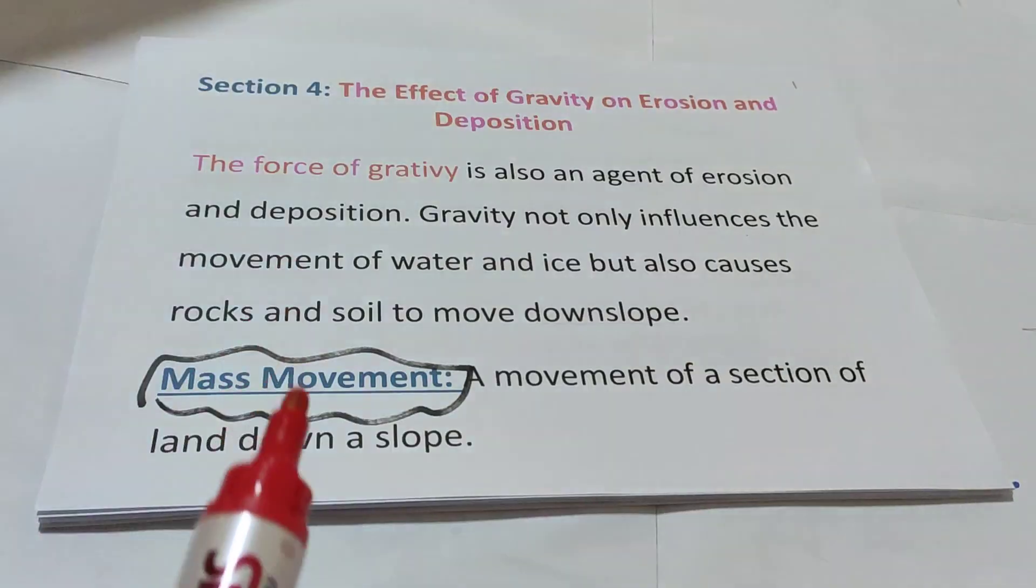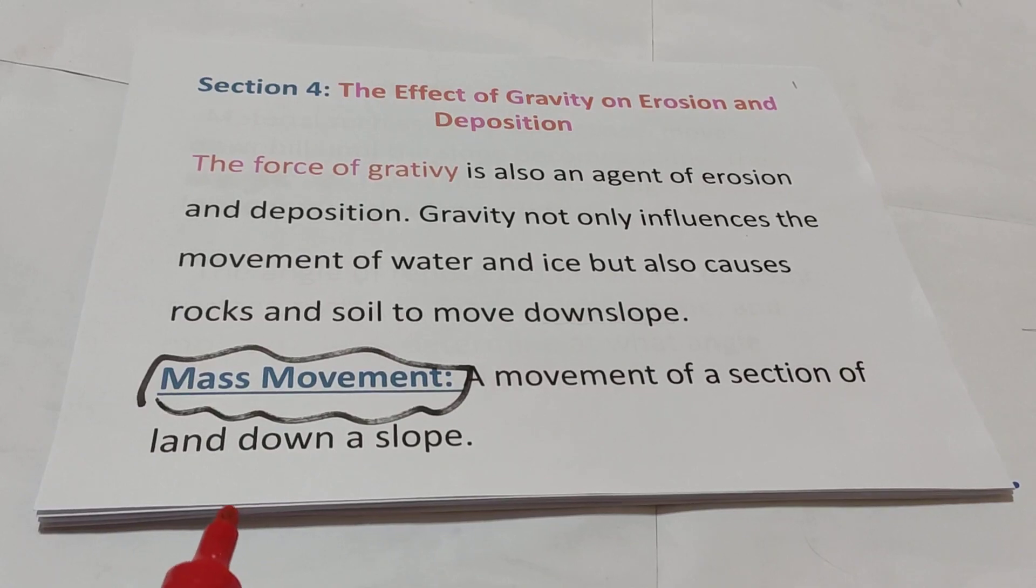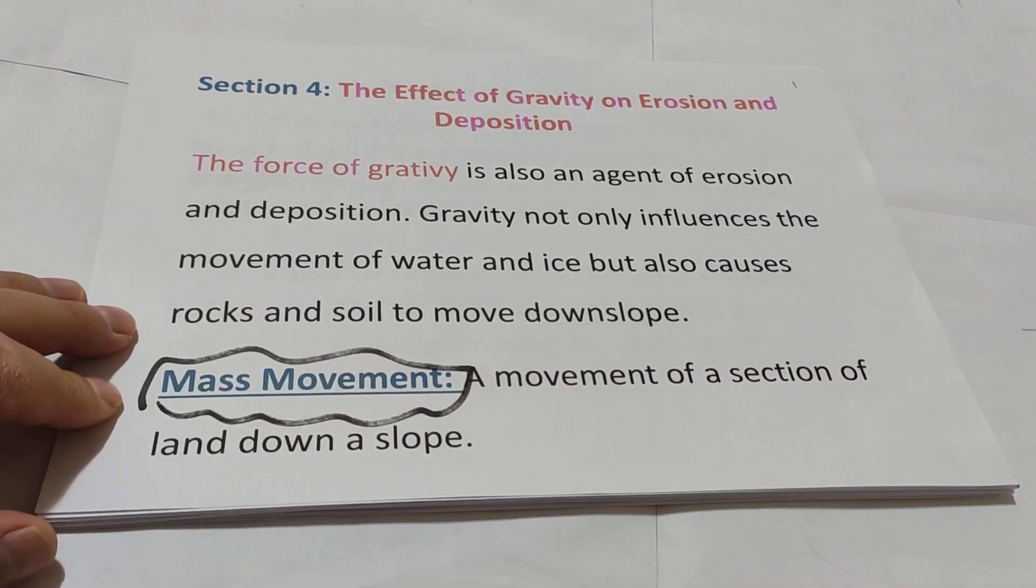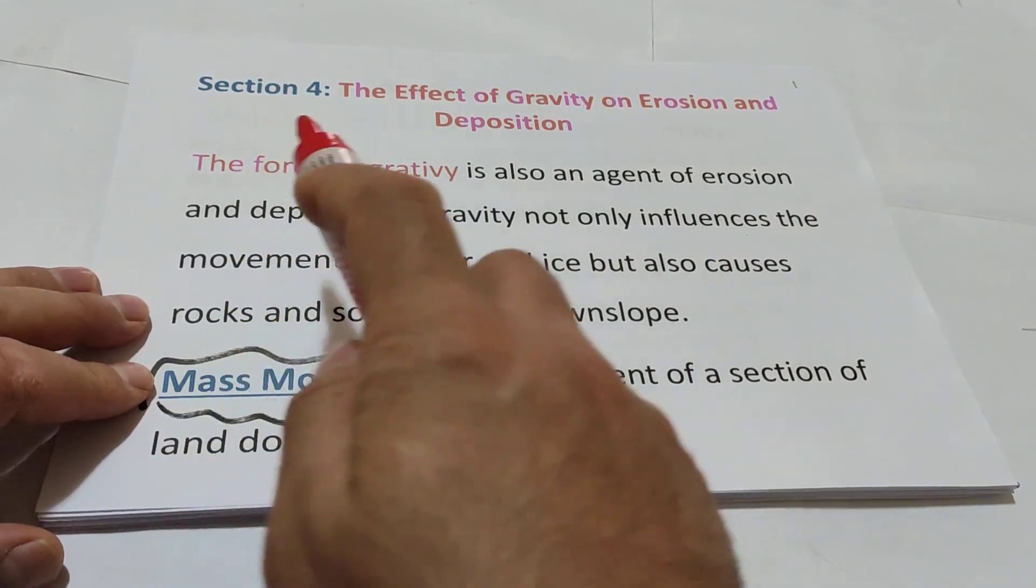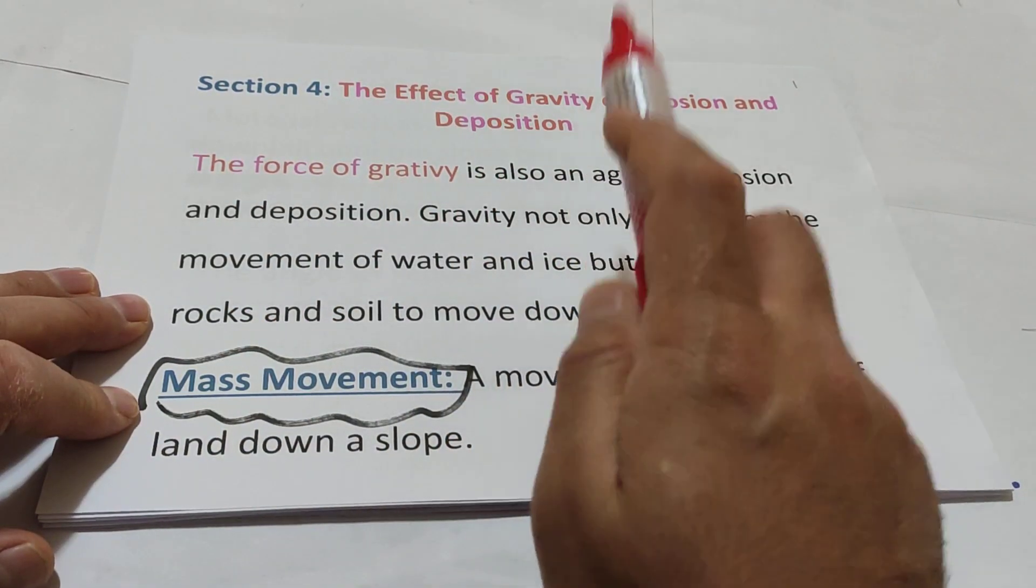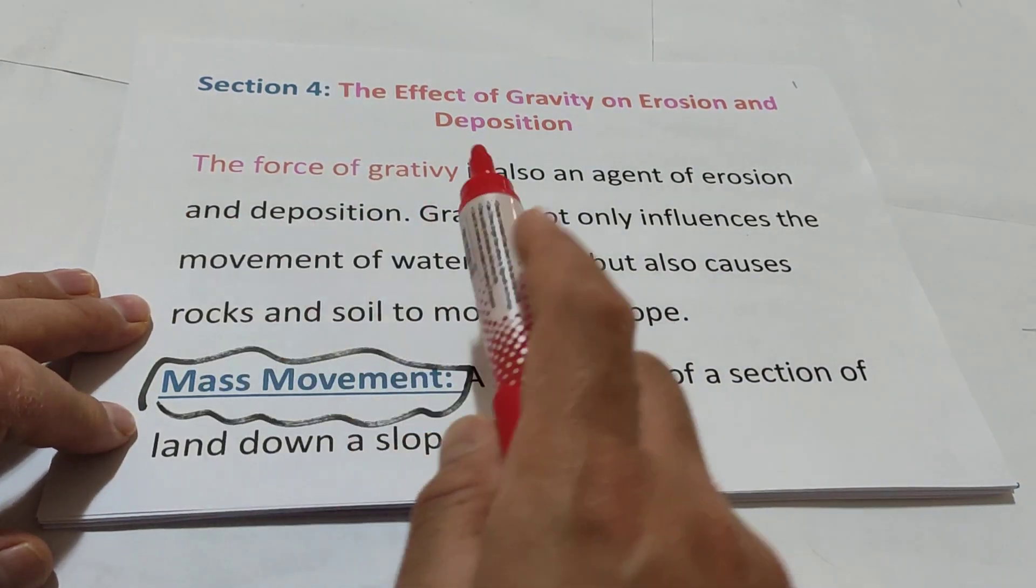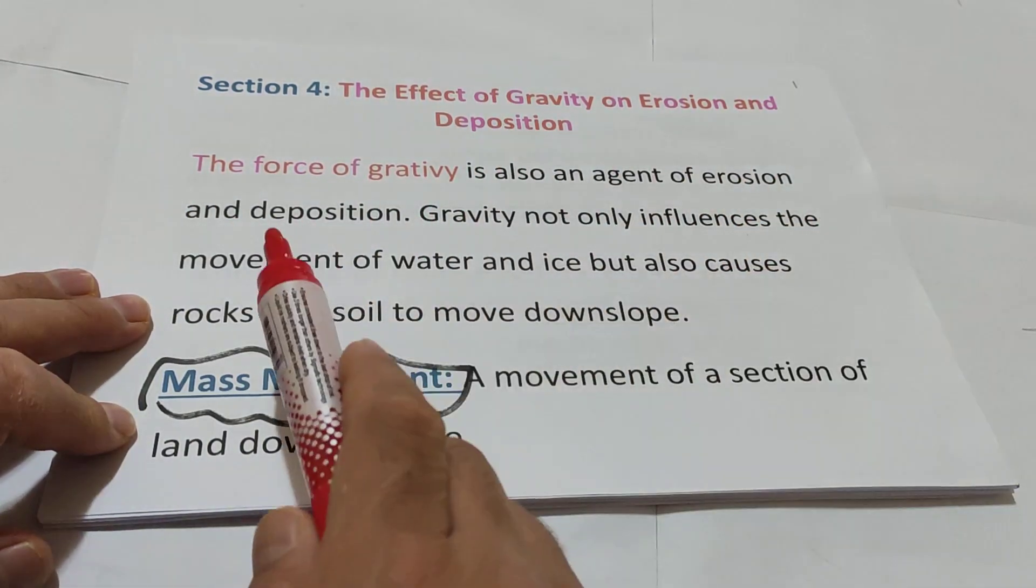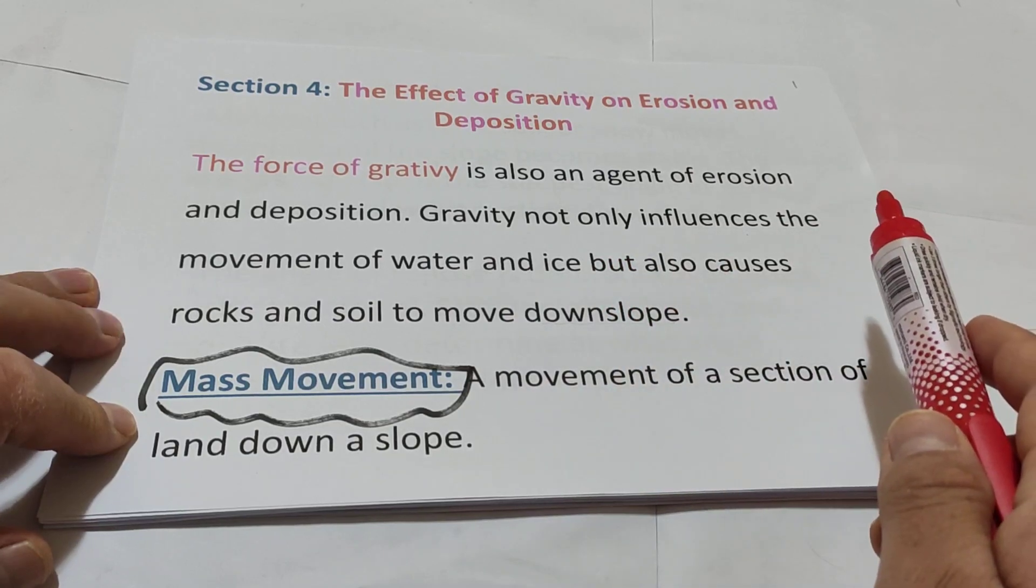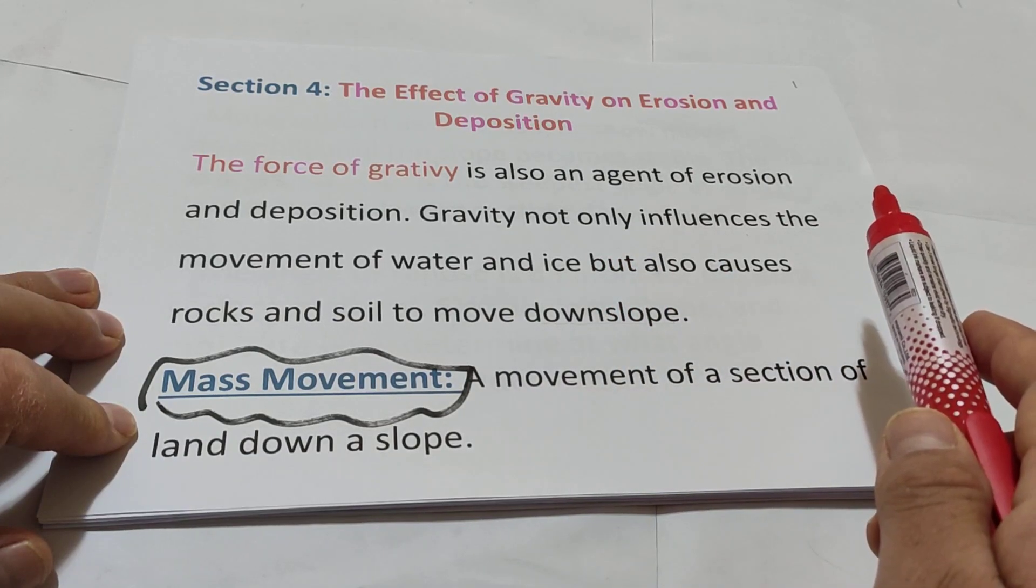What is Section 4? The effect of gravity on erosion and deposition. Let us start. The force of gravity is also an agent of erosion and deposition. Gravity not only influences the movement of water and ice, but also causes rocks and soil to move downslope.